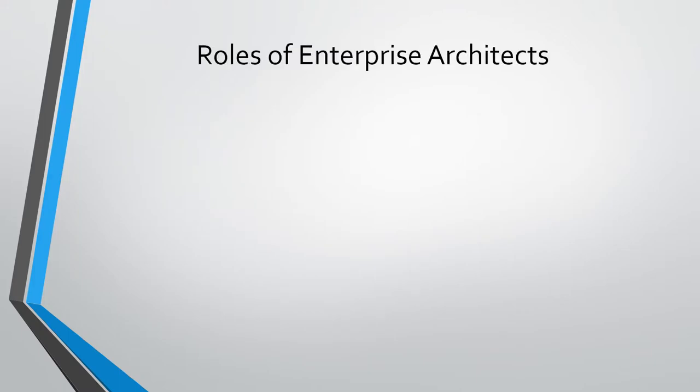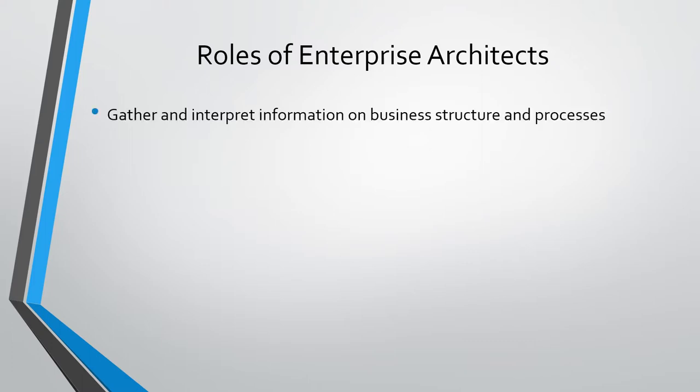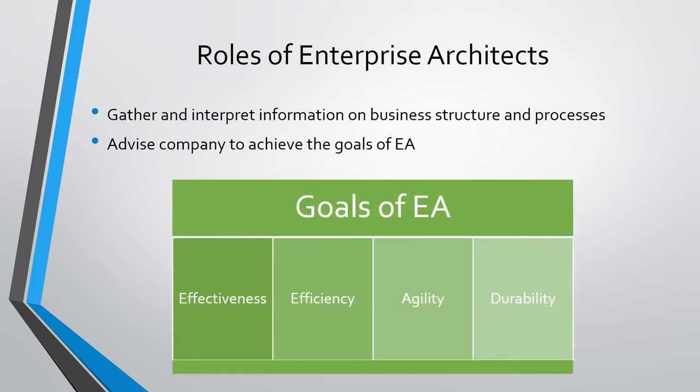Practitioners of Enterprise Architecture are also known as Enterprise Architects. They are usually experts in IT management and systems thinking, also known as the ability to see the big picture. They usually report to the Chief Information Officer, or CIO, of the company. Their job is to interpret the information on the business structure and processes, and later provide advice on how the organization can achieve the goals of Enterprise Architecture, which are to improve the effectiveness, efficiency, agility, and durability of the company.